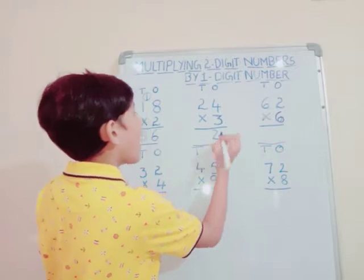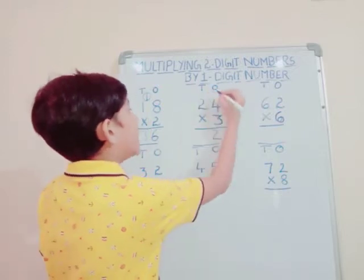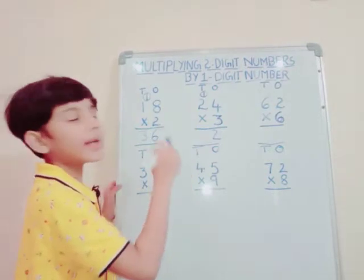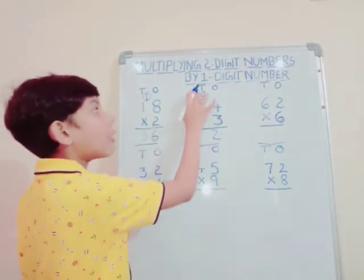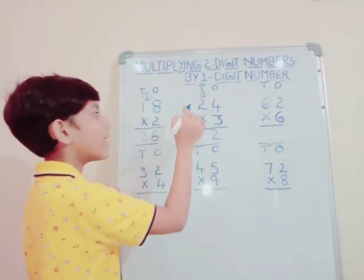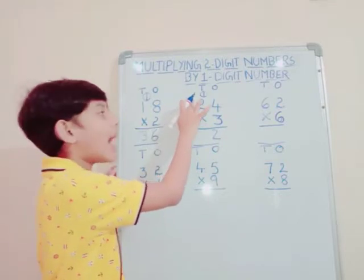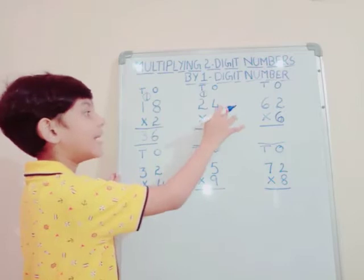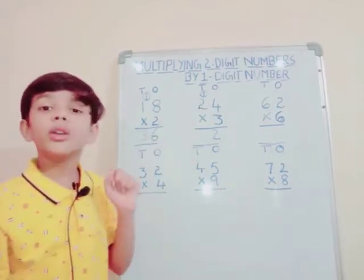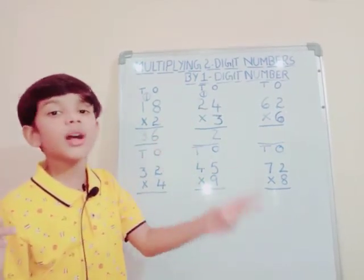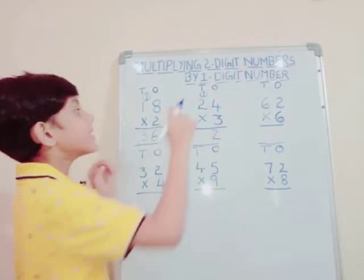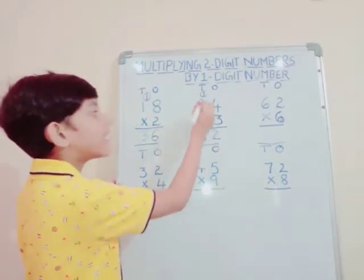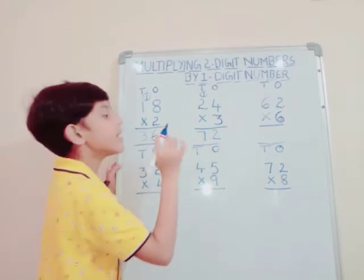We should write 2 and carry up 1. Don't forget to carry up 1 in the 10's place. Now the 10's place — we should multiply the 10's digit number by 3. That is 3×2=6. Then 6 plus 1 equals 7. Our second sum answer is 72.